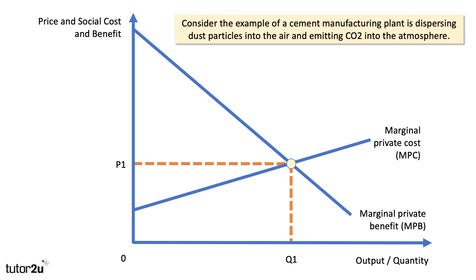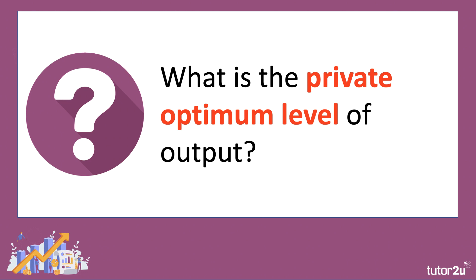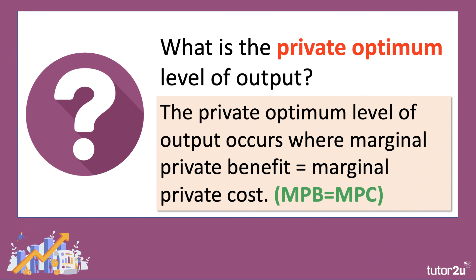Here's a good example. We're going to focus on negative externalities, considering the example of a manufacturing plant — a cement factory — dispersing dust particles into the air and emitting carbon emissions into the atmosphere. So there are two examples of negative externalities from production. The marginal private cost is essentially the supply curve for this manufacturing plant, and the marginal benefit curve is essentially the revenue they get from selling the extra units.